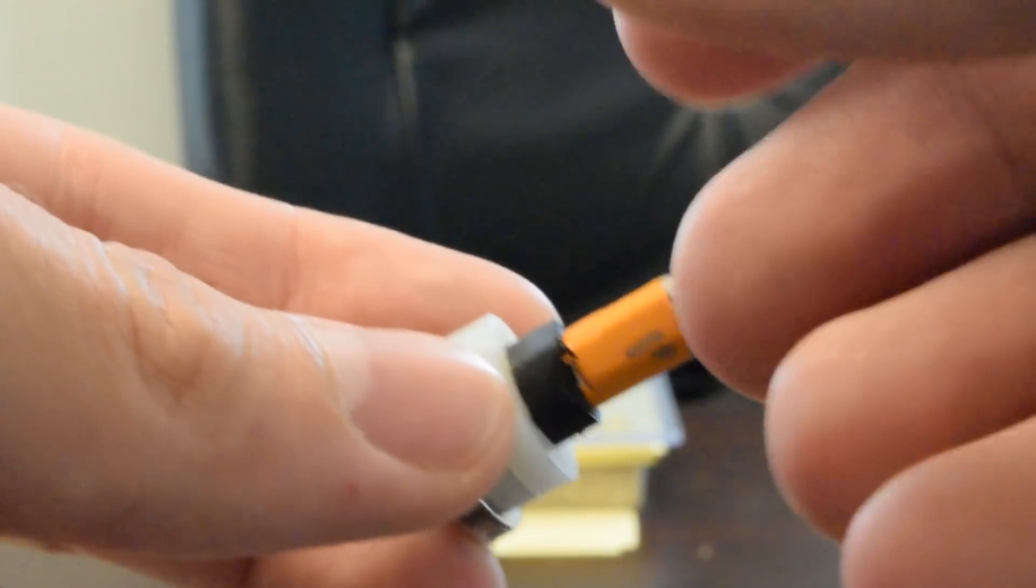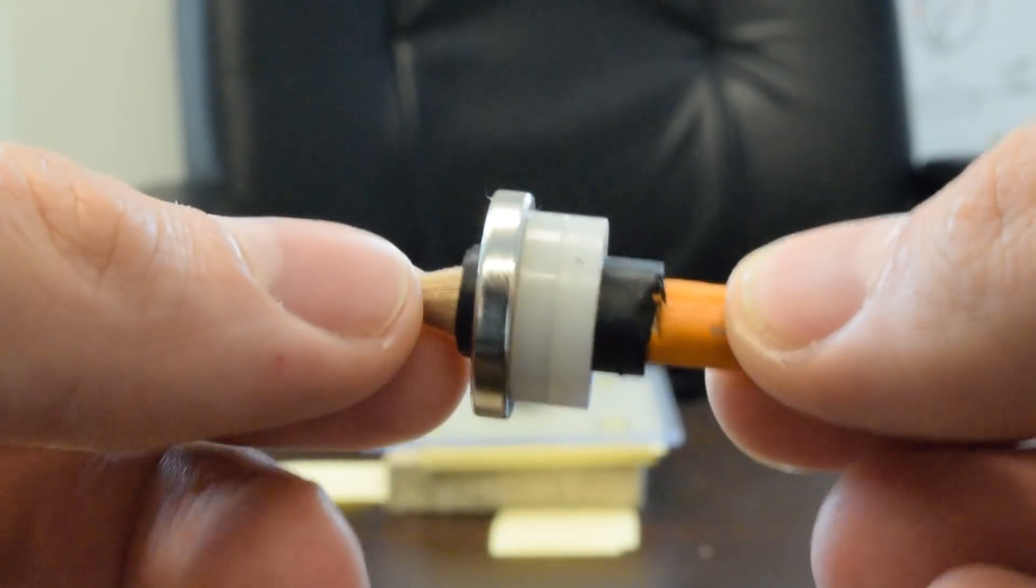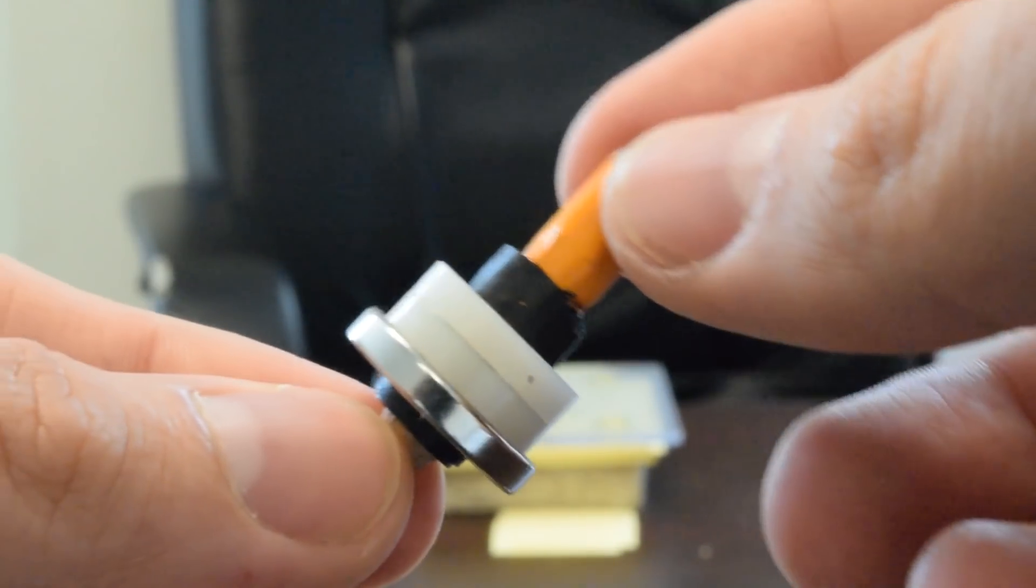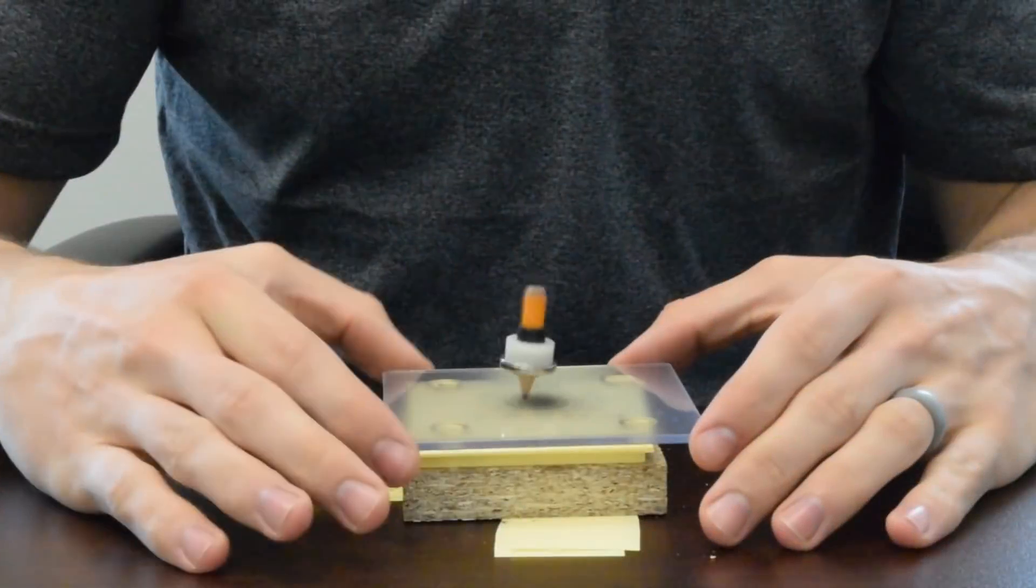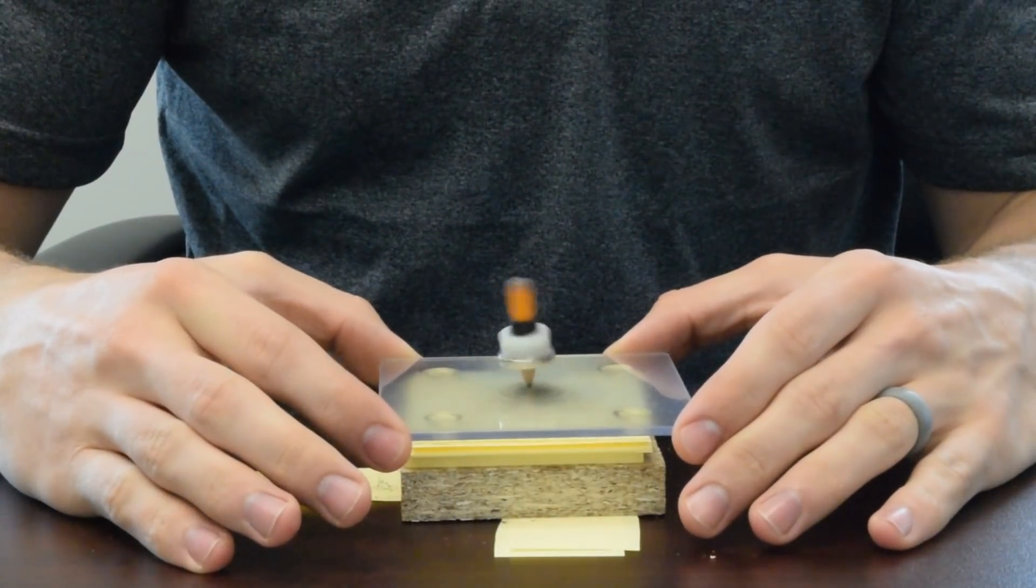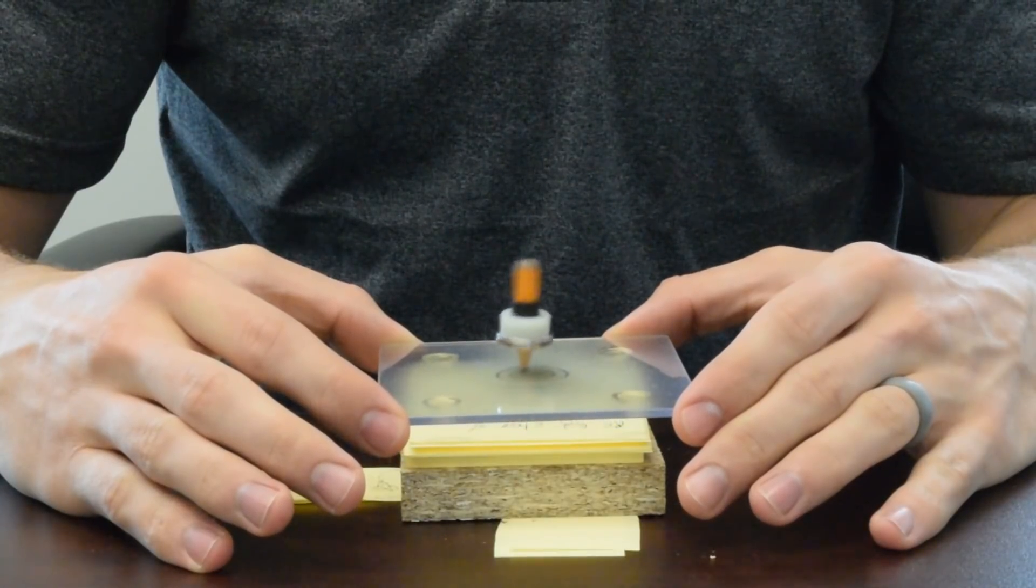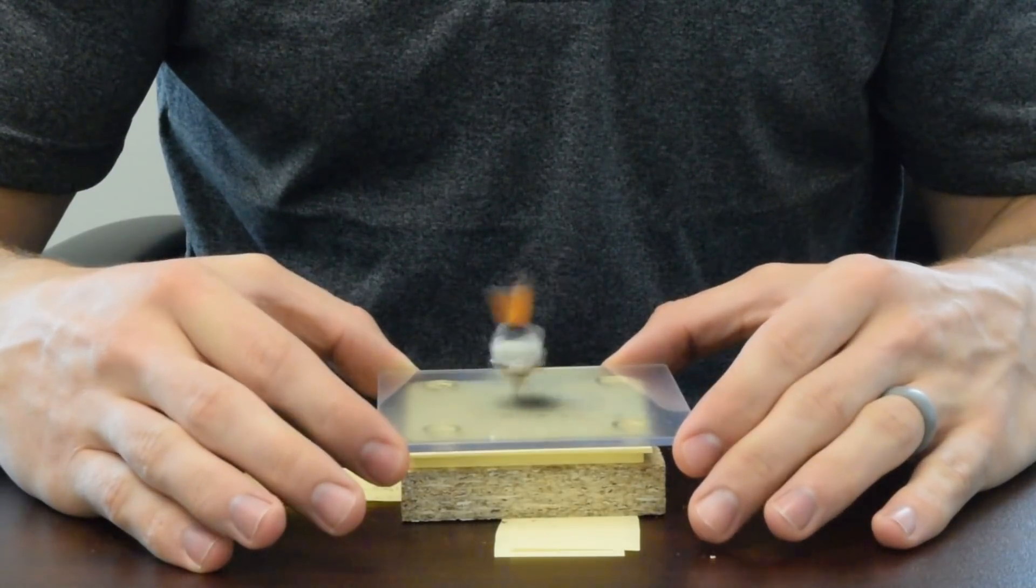You can see our makeshift top here. It's a pencil with electrical tape so that you can put the ring magnet on there. And then there's some plastic washers that we picked up at a hardware store just to use as some weight. It's a lot harder to spin this pencil than it is the top that we printed.